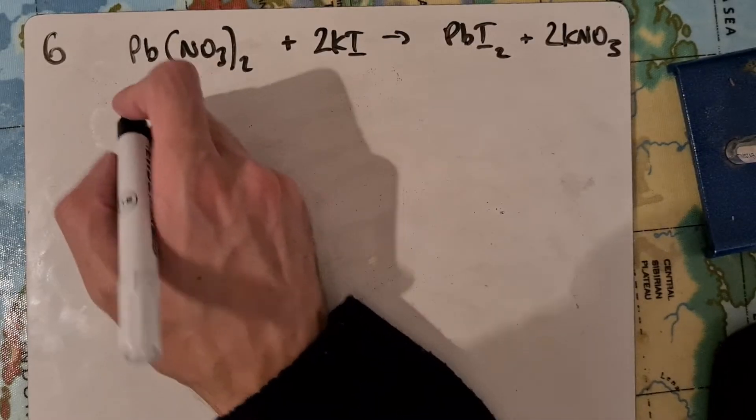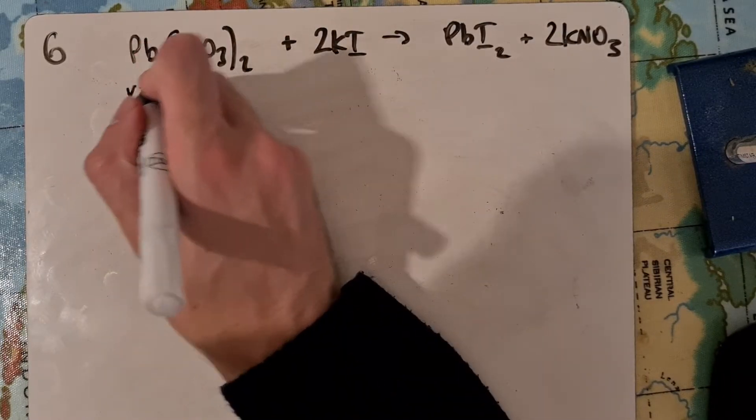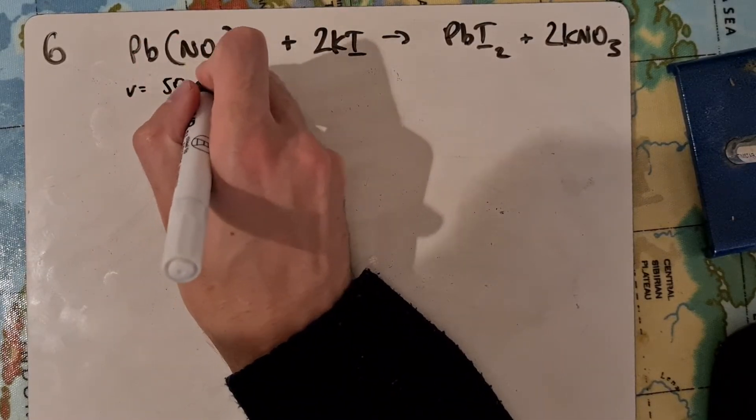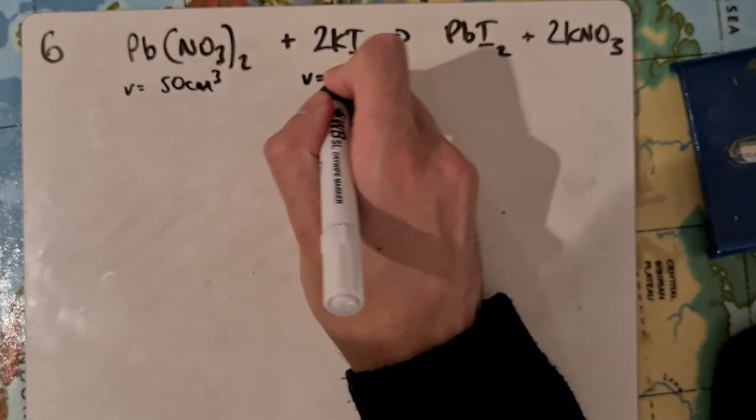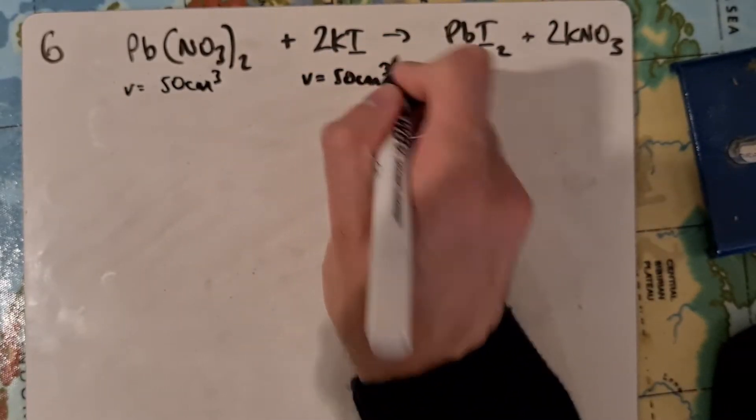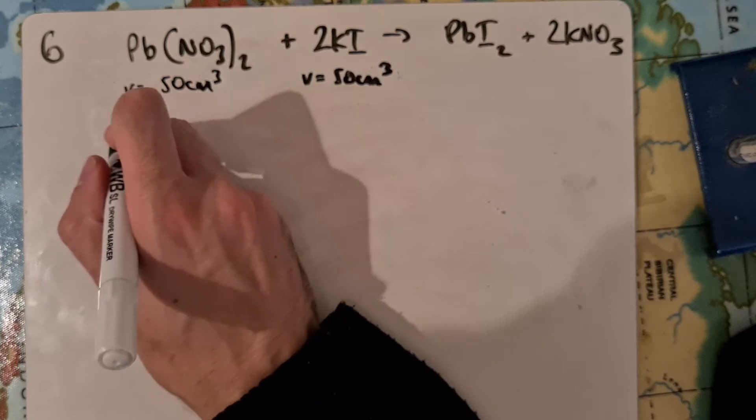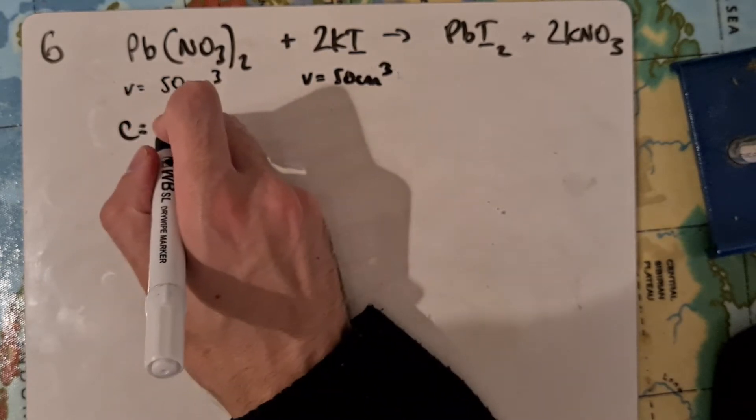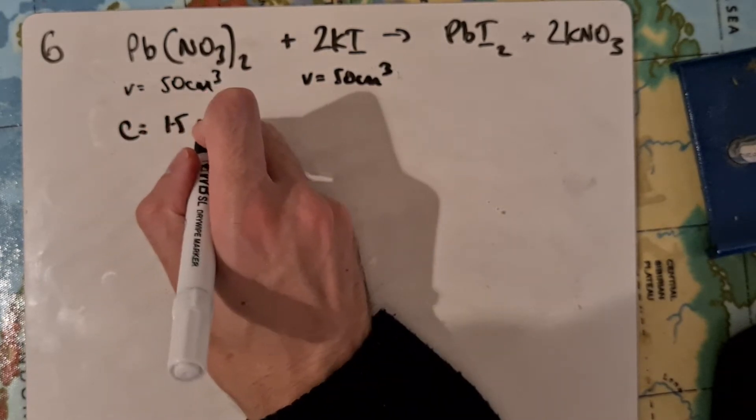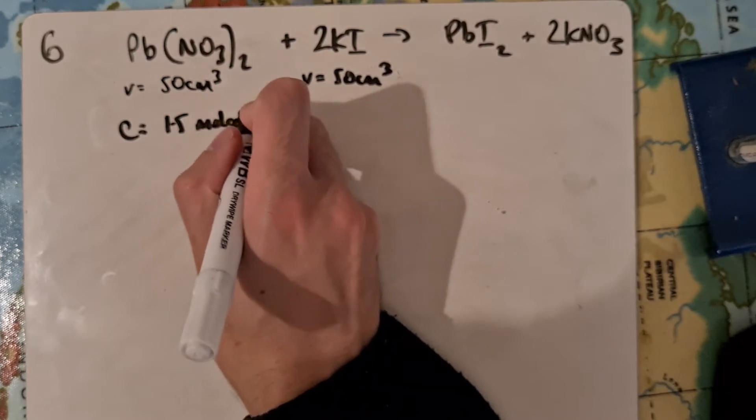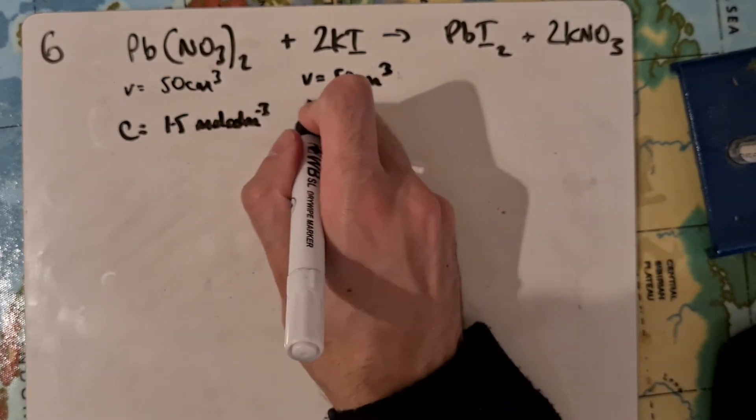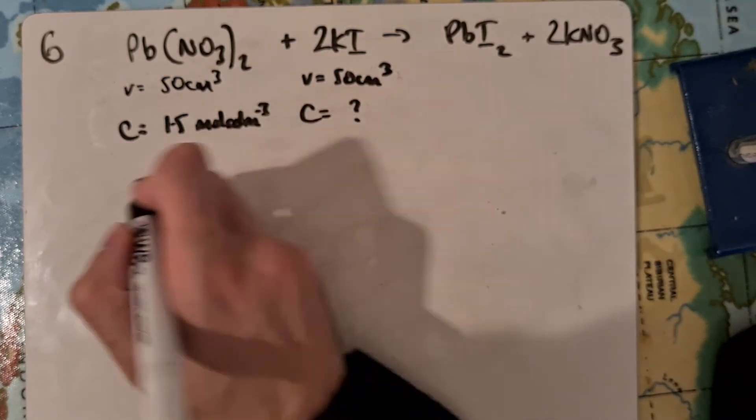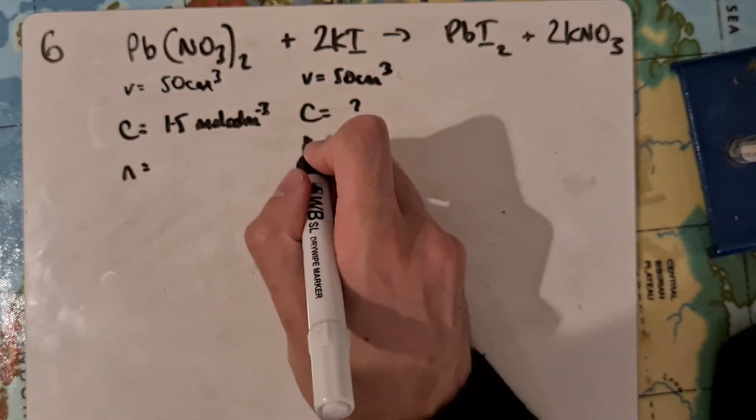It tells us in the question we have 50 centimeters cubed of each of these. We have a concentration here of 1.5 moles per decimetre cubed. We want to work out the concentration on this side. We can work out the number of moles.